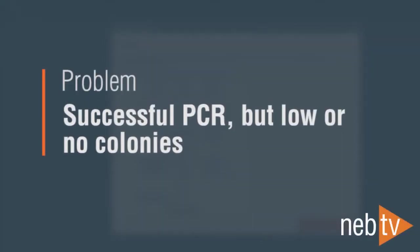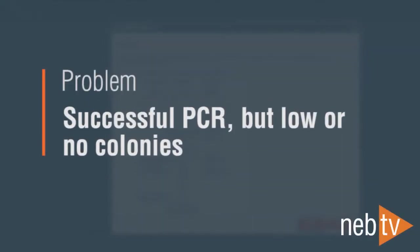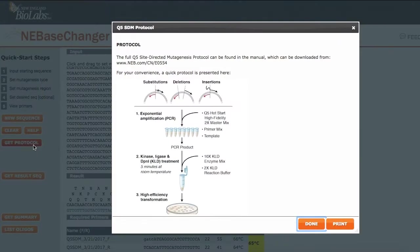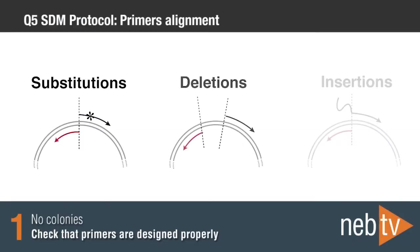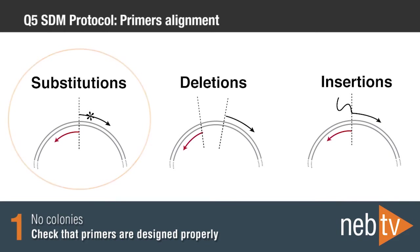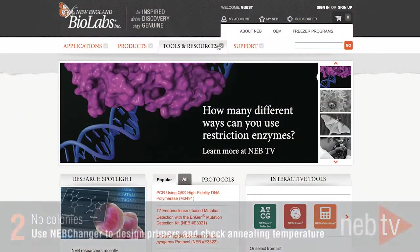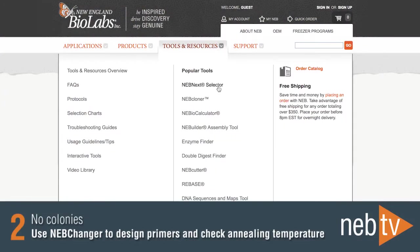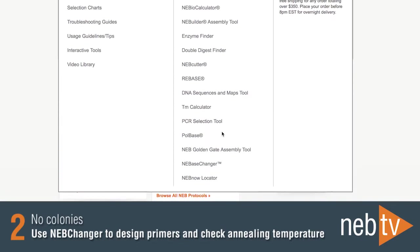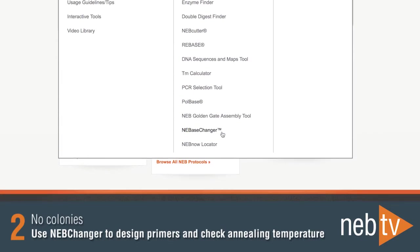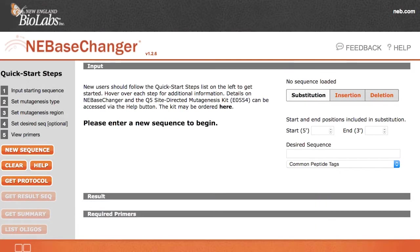If you have PCR product but low or no colonies, first ensure that the primers are designed properly. The five prime ends of the two primers should align back to back, unless your desired outcome is a deletion. For best results, primers should be designed and annealing temperatures calculated using our online tool, NEBase Changer.